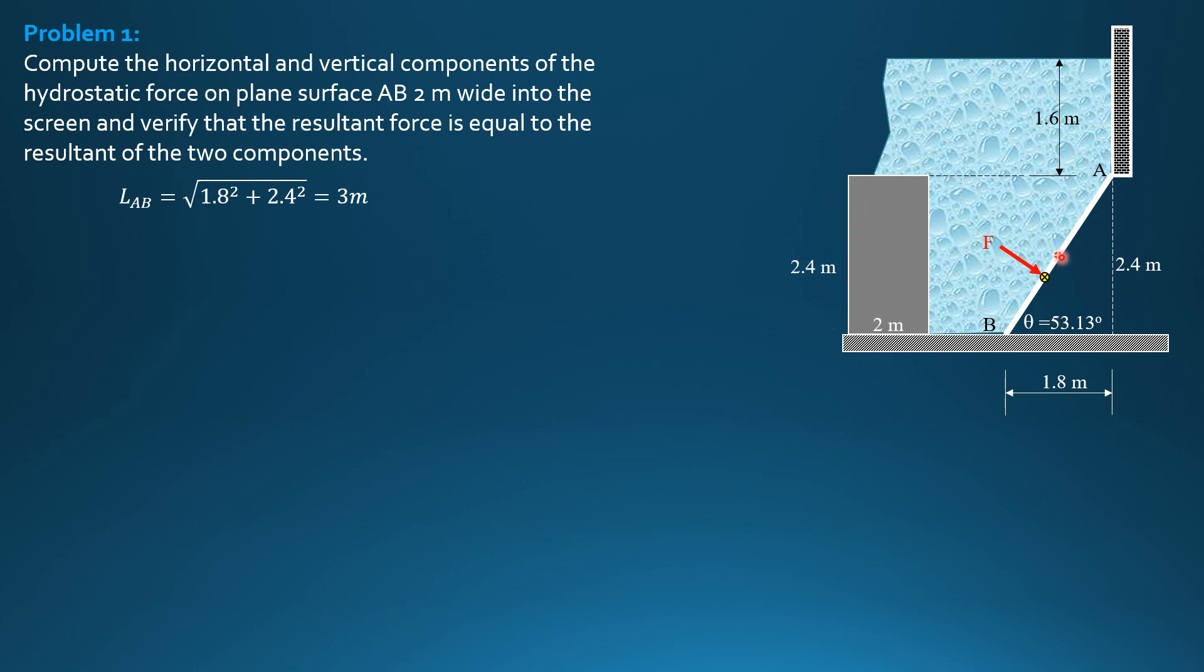So the location of the centroid of this projected area, which is also the centroid of this gate, is 1.6 plus half of 2.4. So H-bar is 2.8 meters for both the projected area and this inclined gate here.